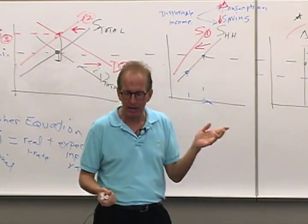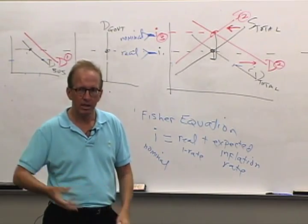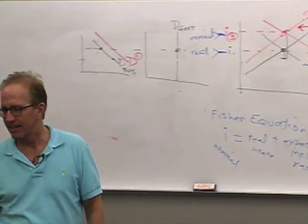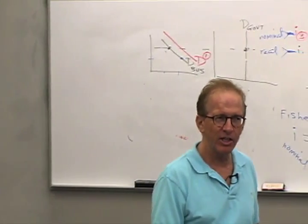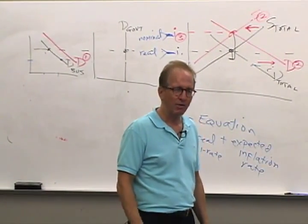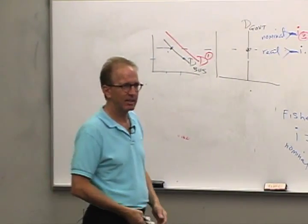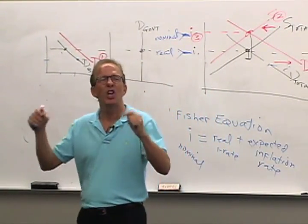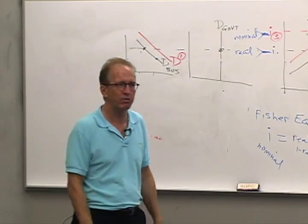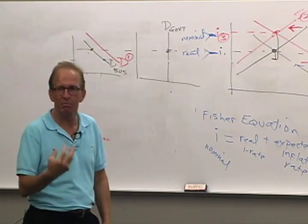This happened in the 1970s — actually it started in the mid-60s and went on for a generation. In 1966, the Federal Reserve was getting pressure from President Lyndon Johnson: you need to help me out here. Fighting a war on poverty, fighting a war in Vietnam — costs a lot of money. Low interest rates would be great. The Federal Reserve resisted a little bit, but then ultimately did it, and they started supplying more money and credit to the economy.